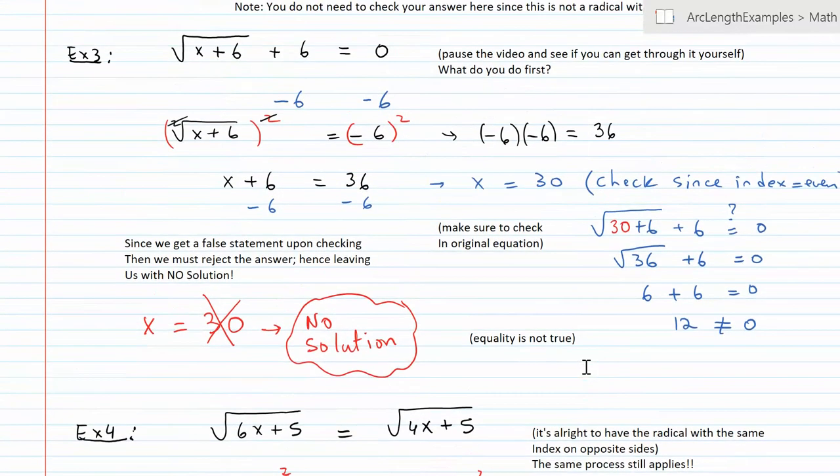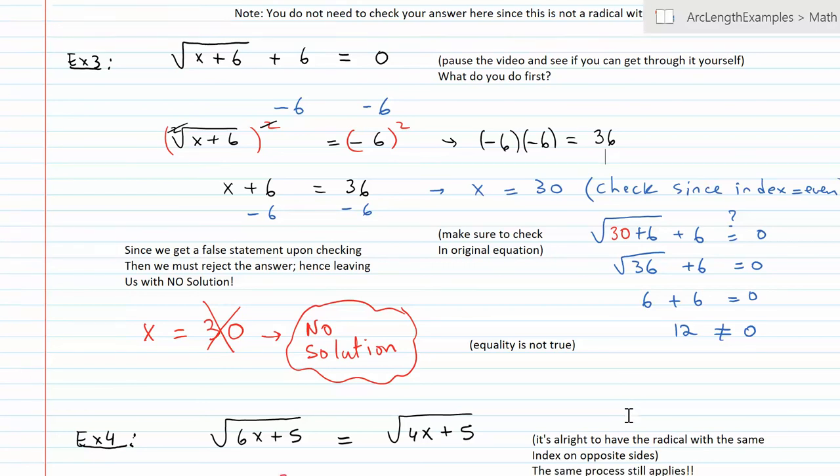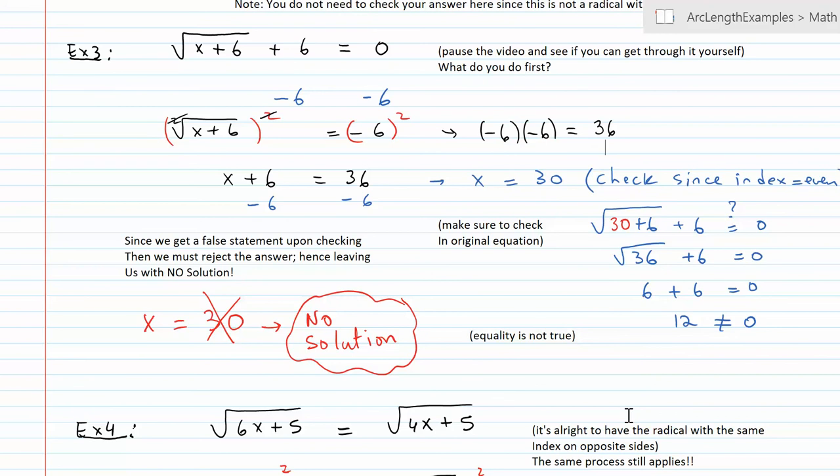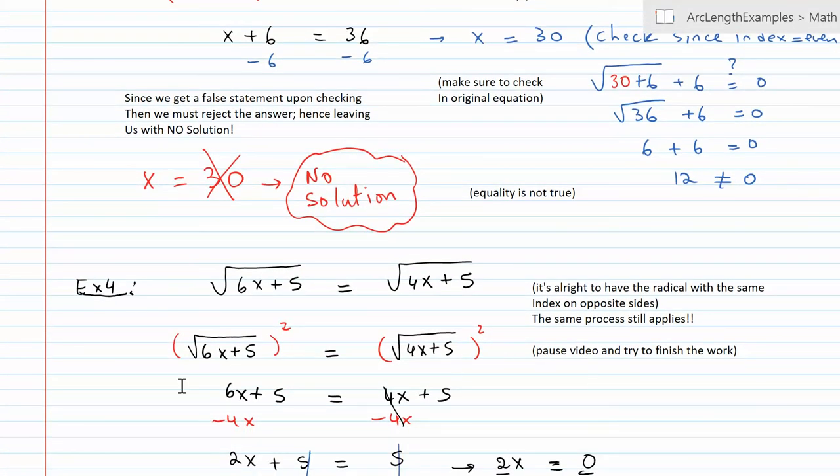Again, I would probably write this down on a separate sheet of paper and try it again yourself first to see if you can get through it. The process should be the same. I assumed you paused the video and that you realized that you have to square both sides. Since they are already on opposite sides, you can do that.